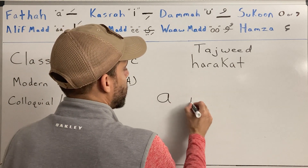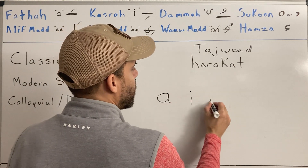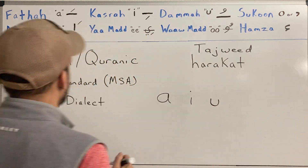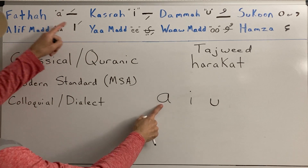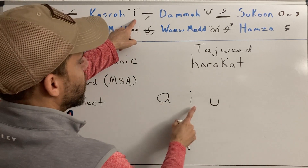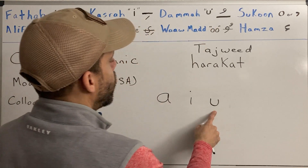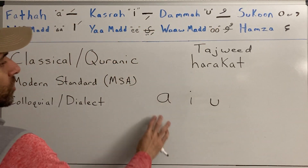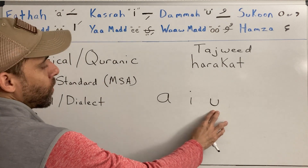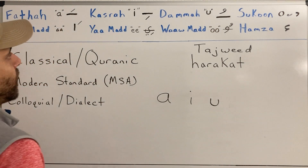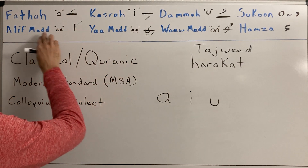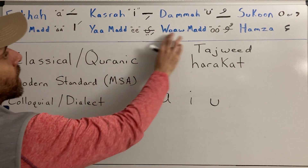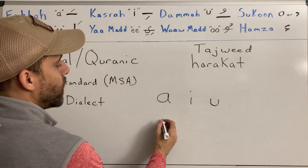The three vowels are: fatha, which gives the 'a' sound; kasra, which gives the 'i' sound; and dhamma, which gives the 'u' sound. These are the short forms. The long forms are alef mad, ya mad, and waw mad.